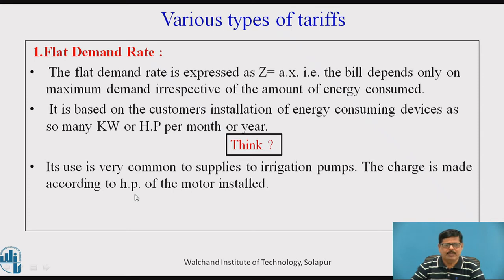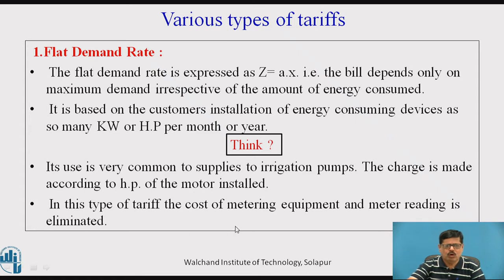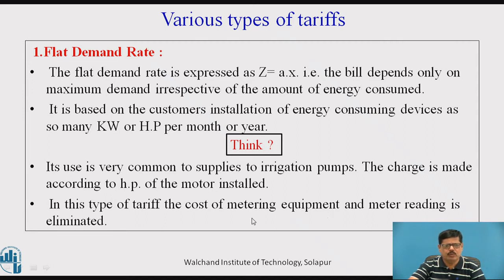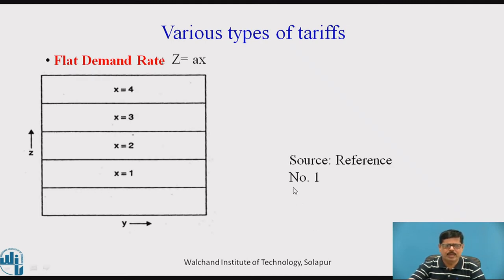That is how the flat demand rate is charged. In this type of tariff, the cost of metering equipment and meter reading is eliminated, since we are charging only upon the installed capacity — there is no need to record a meter reading or install a meter. Graphically, Z = A × X shows that the tariff Z depends only on maximum demand X and remains constant irrespective of the electrical energy used (Y). This is the flat demand rate.